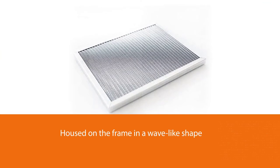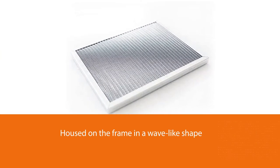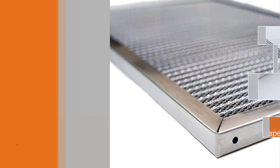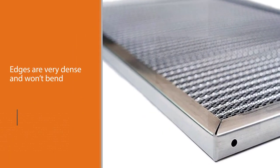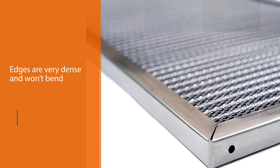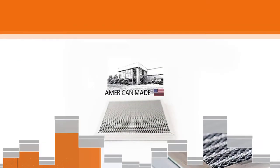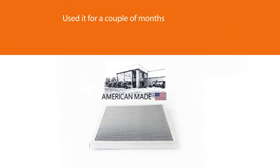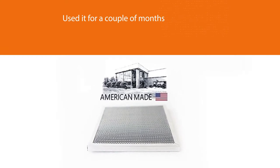The filter itself is mesh wire, which is housed on the frame in a wave-like shape. All edges are very dense and won't bend, even after you've used it for a couple of months. It's made entirely of aluminum and will trap dirt, so it doesn't get in the air that you breathe. The noise level is kept down as well, with a frame that takes screws for you to tighten it into place in the slot.